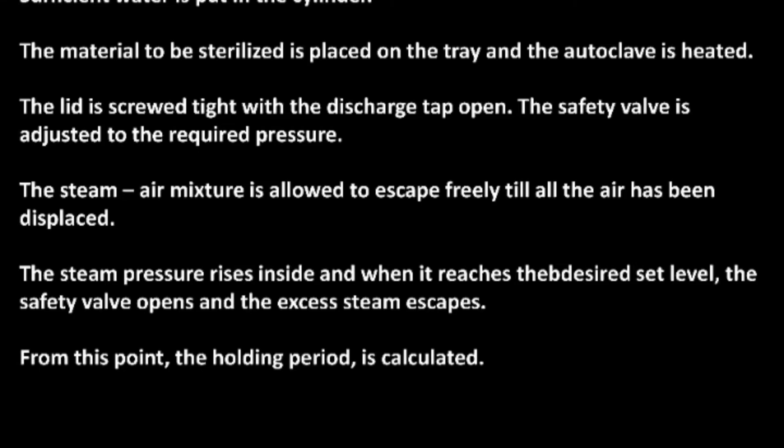Sufficient water is put in the cylinder, the material to be sterilized is placed on the tray, and the autoclave is heated. The lid is screwed tight with the discharge tap open, and the safety valve is adjusted to the required pressure. The steam-air mixture is allowed to escape freely until all air has been displaced. The steam pressure then rises inside, and when it reaches the desired set level the safety valve opens and excess steam escapes. From this point, the holding period is calculated.